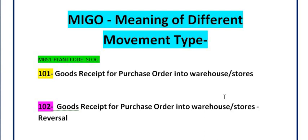Many people use transaction code MB51 but do not apply movement type filters, which makes it harder to find what you need. By using movement type filters, you can easily track inventory: when it was received in the store, when it was issued to different projects like maintenance, sales, cost center consumption, asset capitalization, or WBS capitalization.